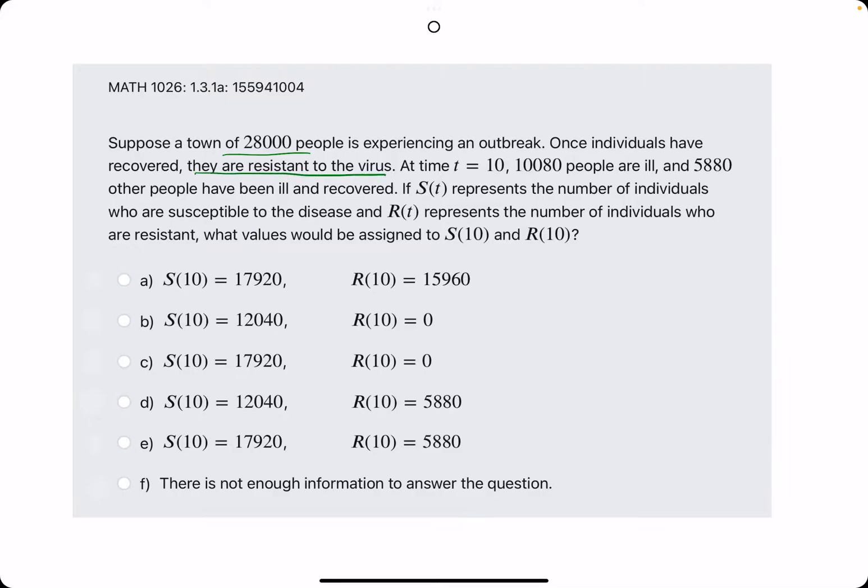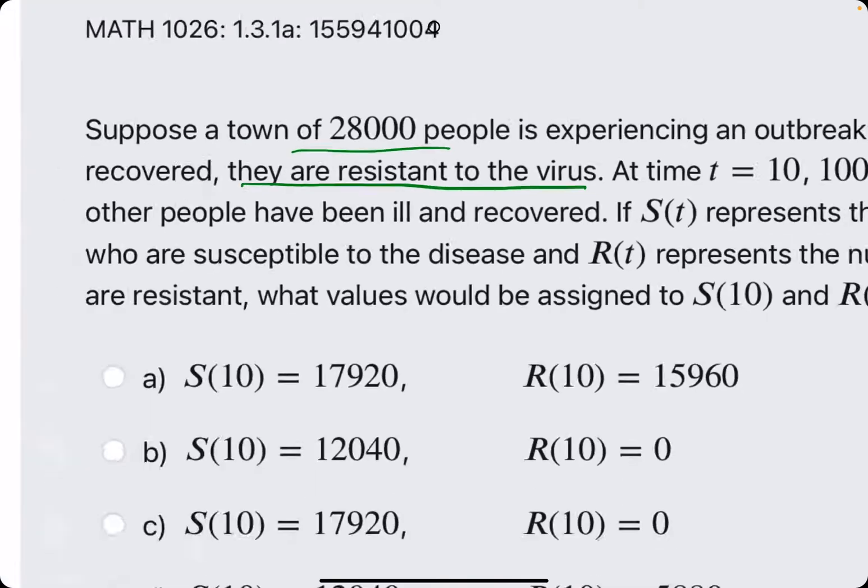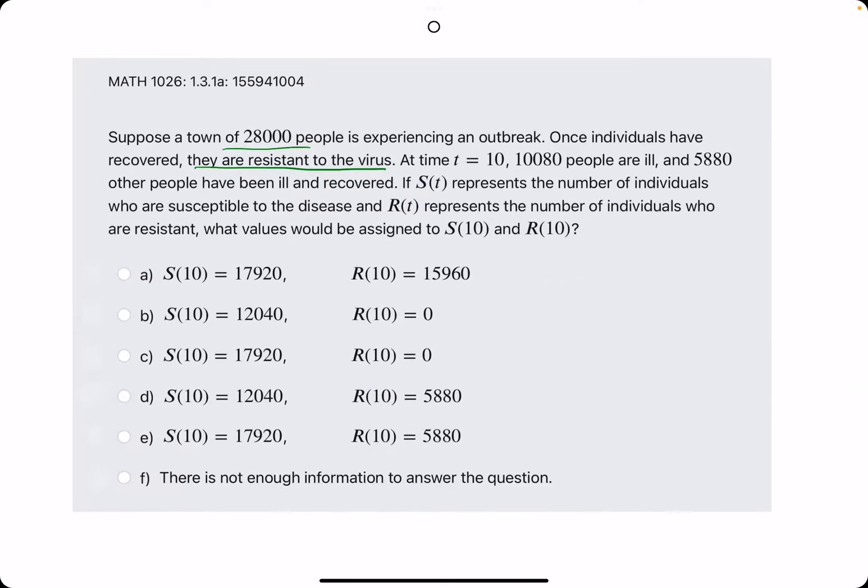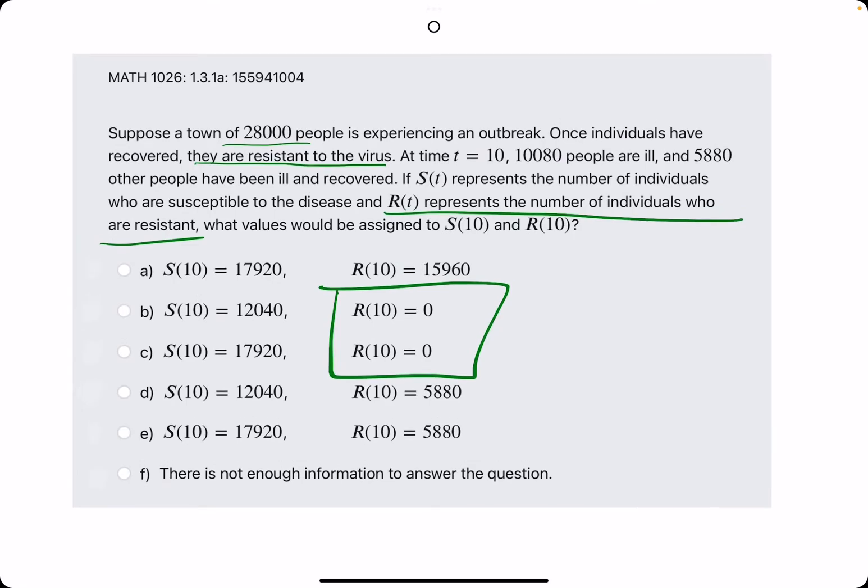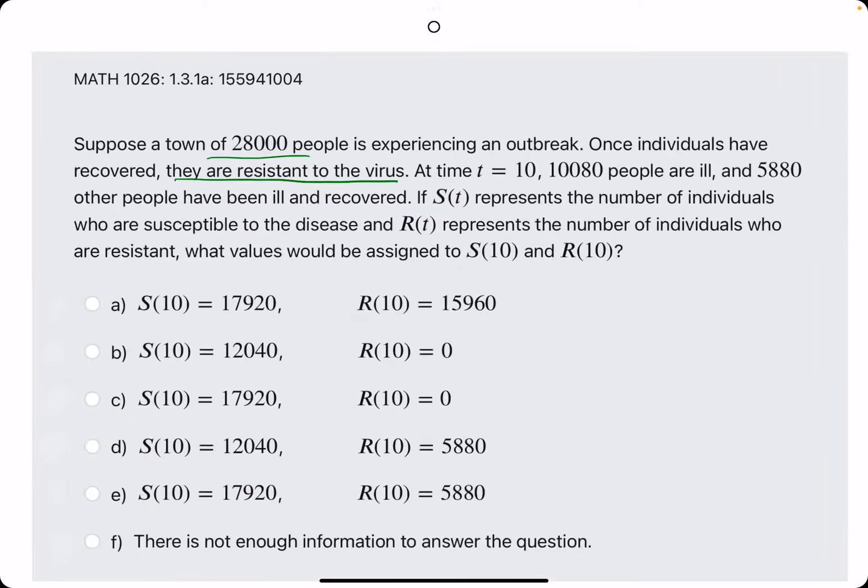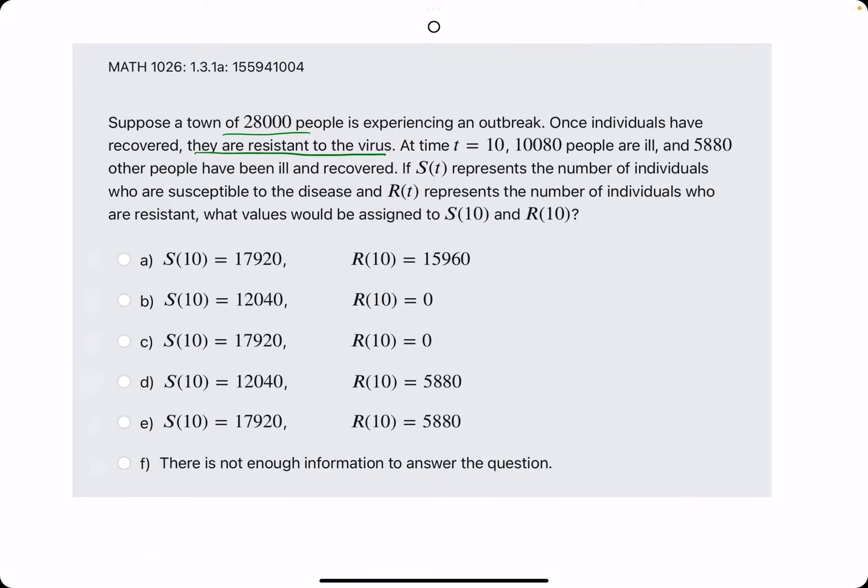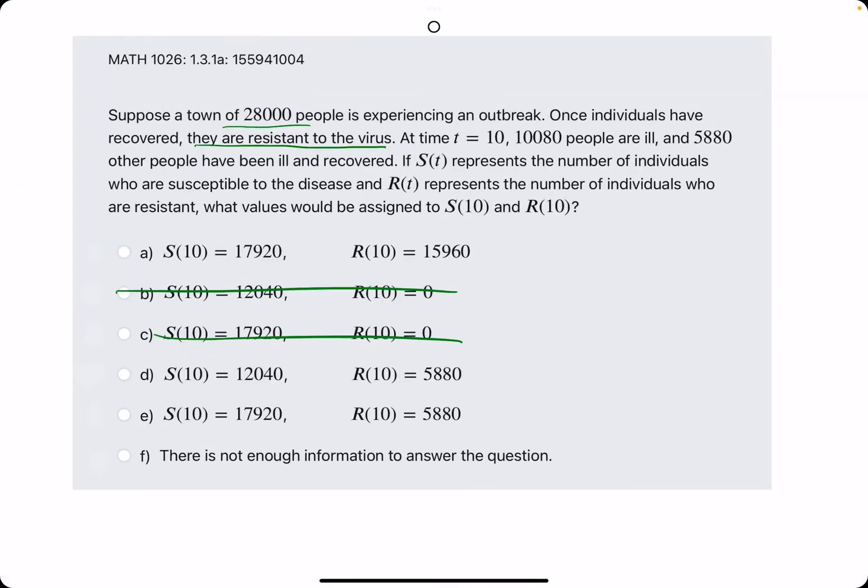In some examples, it'll say they are resistant to the virus. In others, it might say they may be infected multiple times. If they can be infected multiple times, the number of people who are resistant would be zero. However, in this case, it says once they have recovered, they are resistant to the virus, which means our answer will not be one of these with R equals zero.